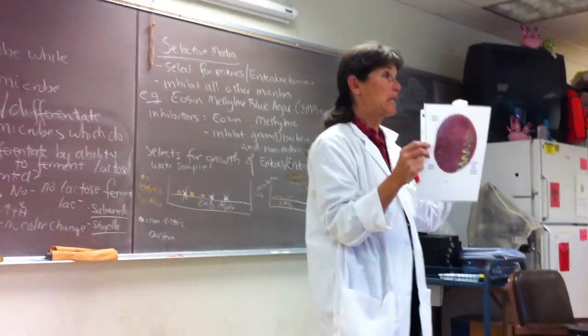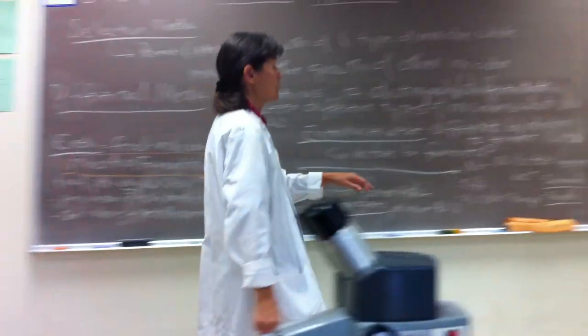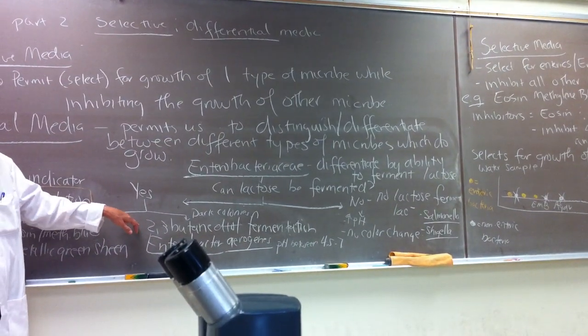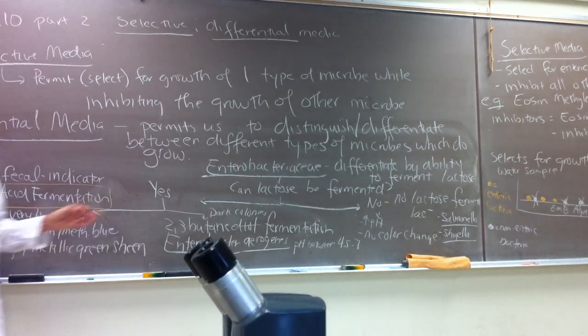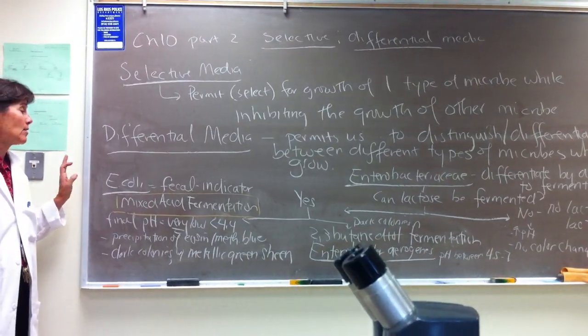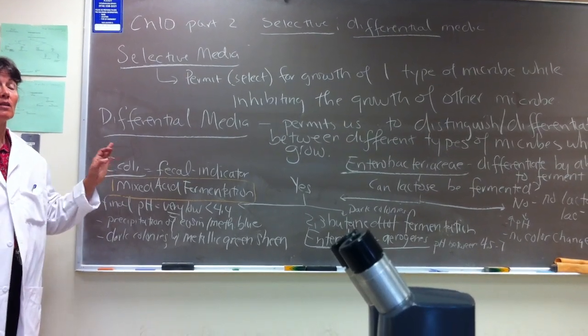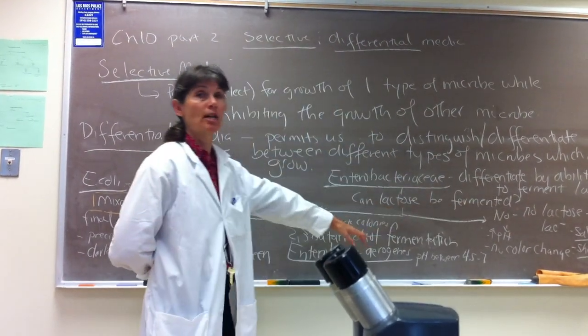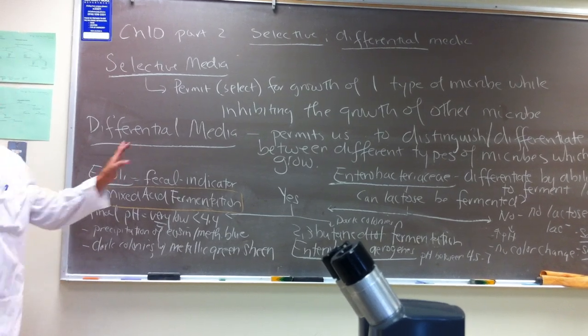Now I do understand, you guys, this is pretty subtle, but we want to understand how the eosin-methylene blue permits us to differentiate between the lactose negative fermenters where they grow but there's no dark color, the butanediol fermenters such as Enterobacter aerogenes which will have a dark colony but lack metallic green, and then the ones that we really want to pay attention to, of course, is the mixed acid fermenters which could represent E. coli: dark colonies and metallic green sheen. So the eosin-methylene blue selects for the growth of Enterobacteriaceae and permits us to differentiate or distinguish between different groups of those bacteria.